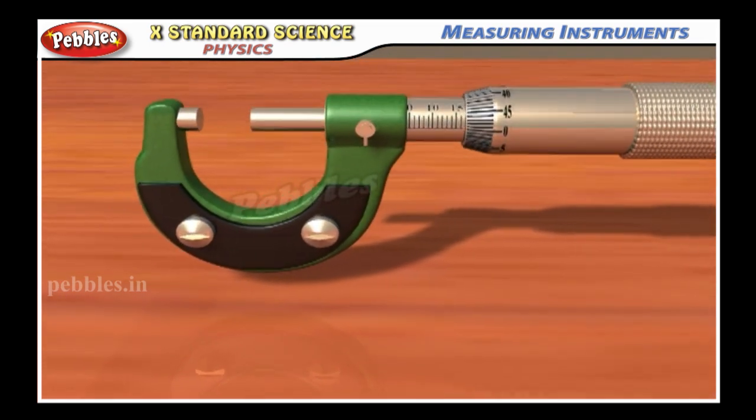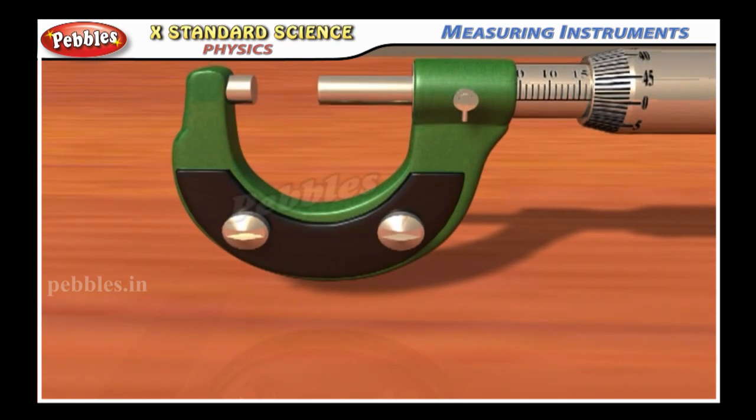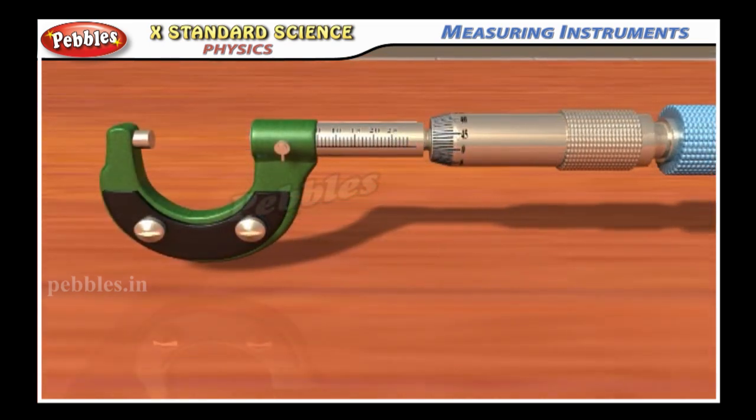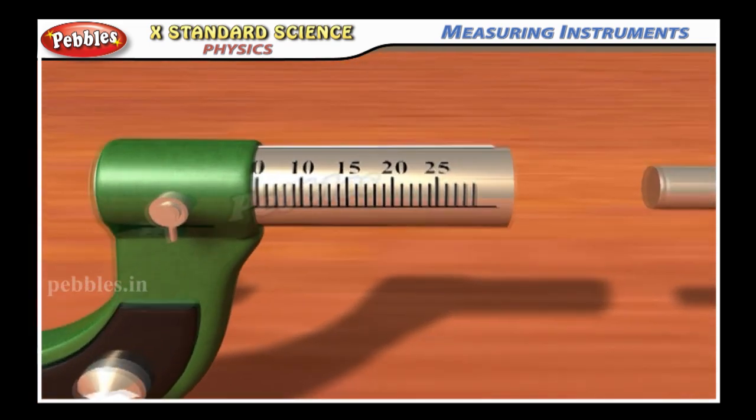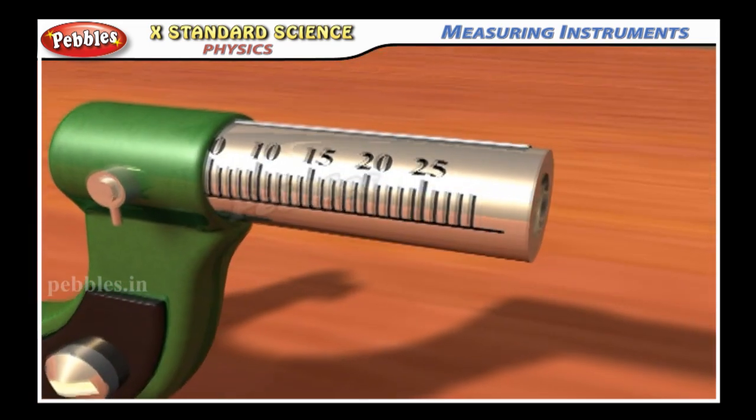The screw gauge consists of a U-shaped metal frame. A hollow cylinder is attached to one end of the frame. Grooves are cut on the inner surface of the cylinder through which a screw passes through.